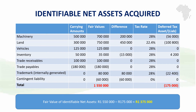Going back to the assets and liabilities of the subsidiary at acquisition date: machinery was undervalued by $200,000, so we increase our net asset value by $200,000 and account for deferred tax at 28%, which is $56,000. Land has a carrying amount of $300,000 but a fair value of $750,000, so we bring in a revaluation of $450,000; that revaluation attracts deferred tax at the CGT rate, which is $100,800. There are no adjustments to vehicles. Inventory needs to be written down by $15,000, which attracts a deferred tax asset of 28%, being $4,200. There are no adjustments to trade receivables or trade payables.